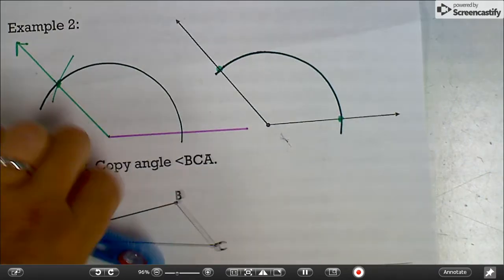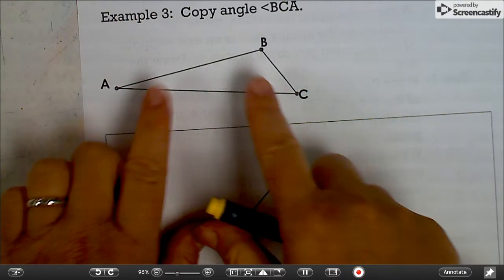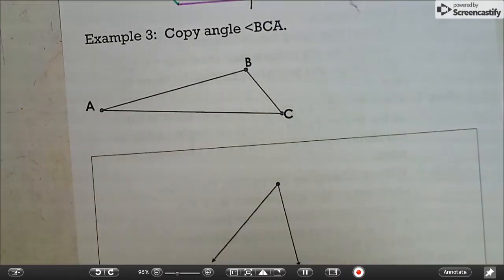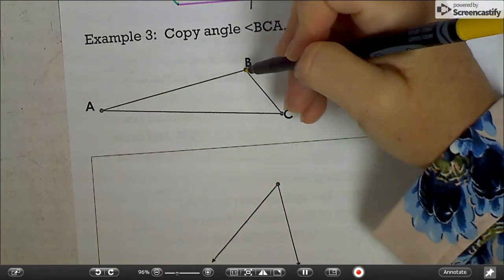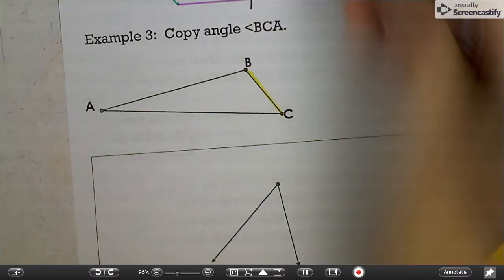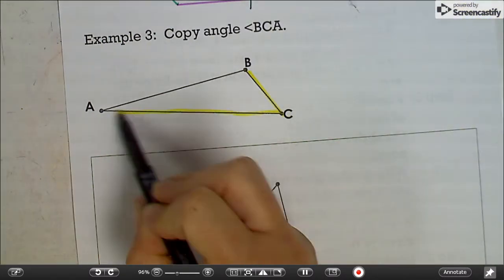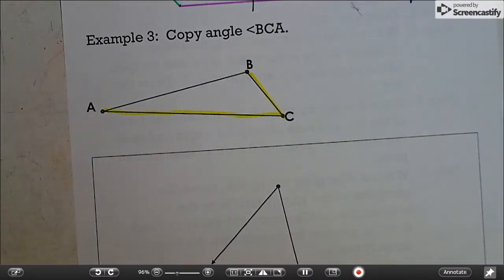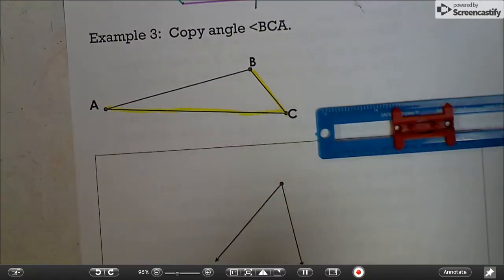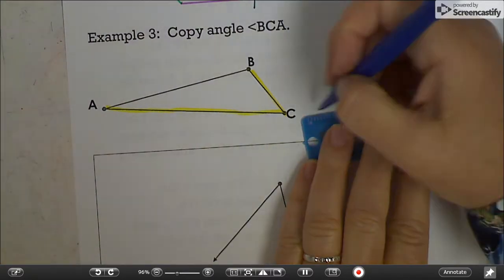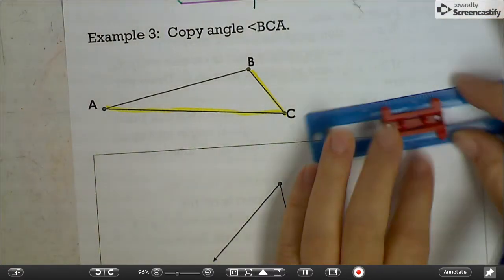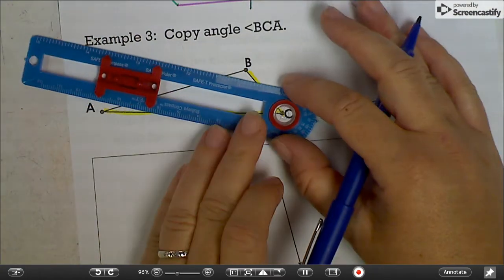And again, we need to be able to do that on a picture that has more than just one angle. So we're focused on angle BCA. That's what it looks like. You need a new segment. It doesn't matter which direction. There's my new segment. I'm going to put my spinner on point C.